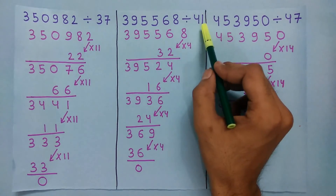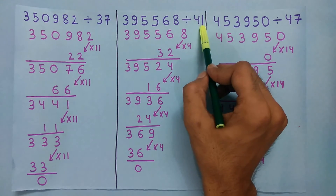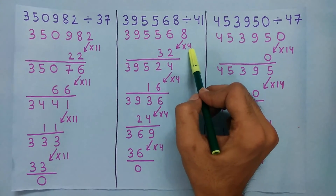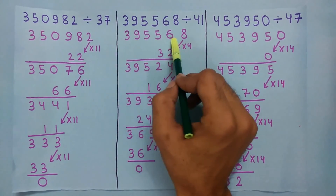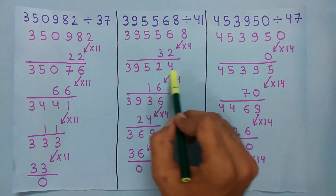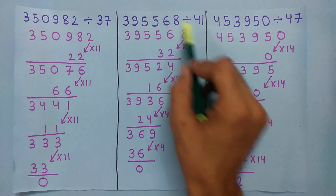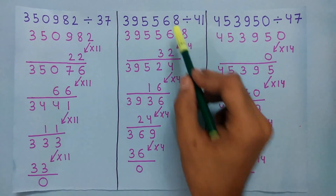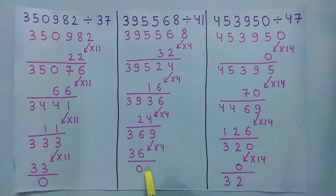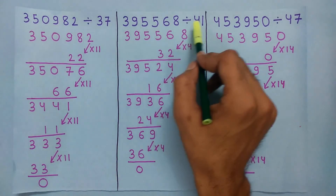Now let's take an example for 41. To check if this number is divisible by 41 or not, multiply the last digit by 4 and we get 32. Now subtract this 32 from the remaining number and we get this number. This number is again large, so we repeat the process until we get a small number. In this case the small number is 0, so this number is also divisible by 41.